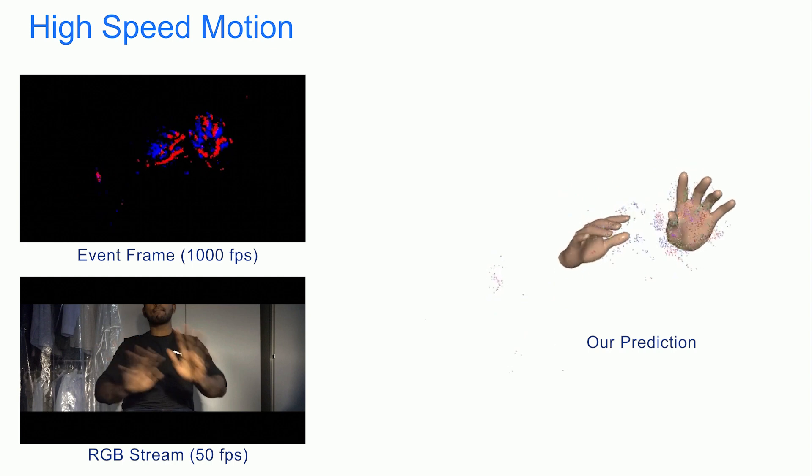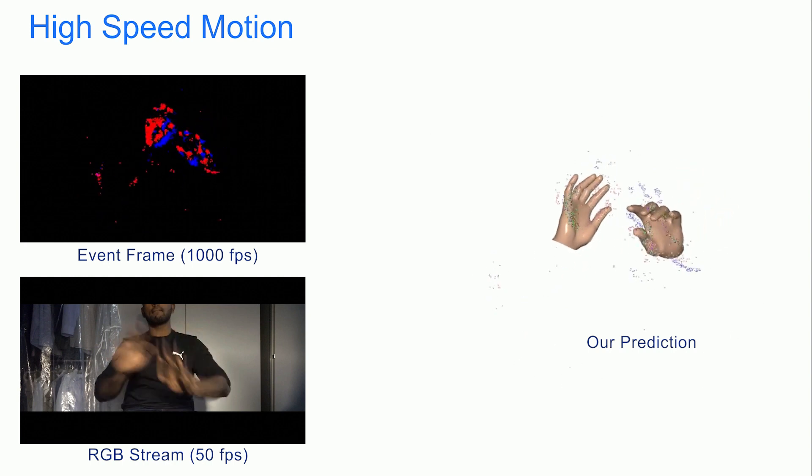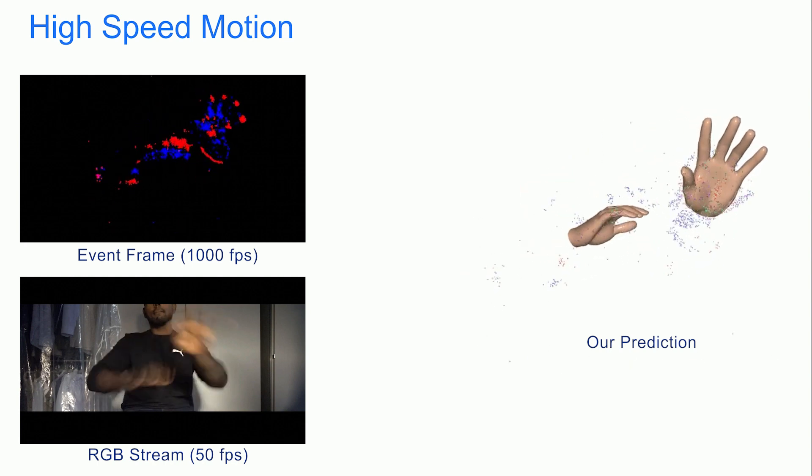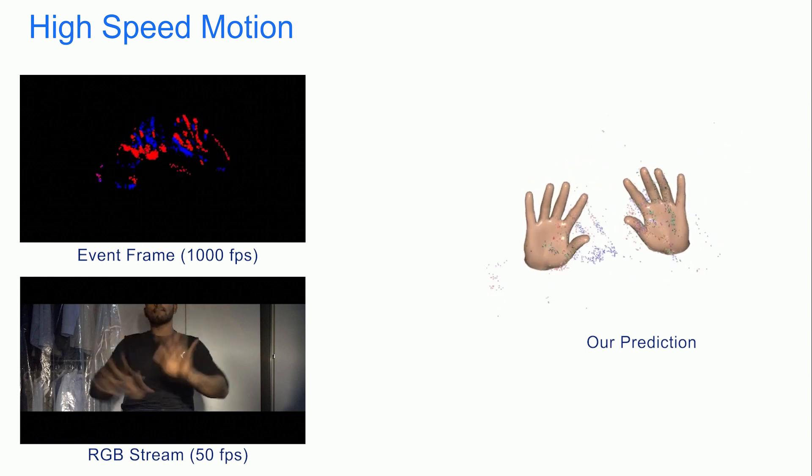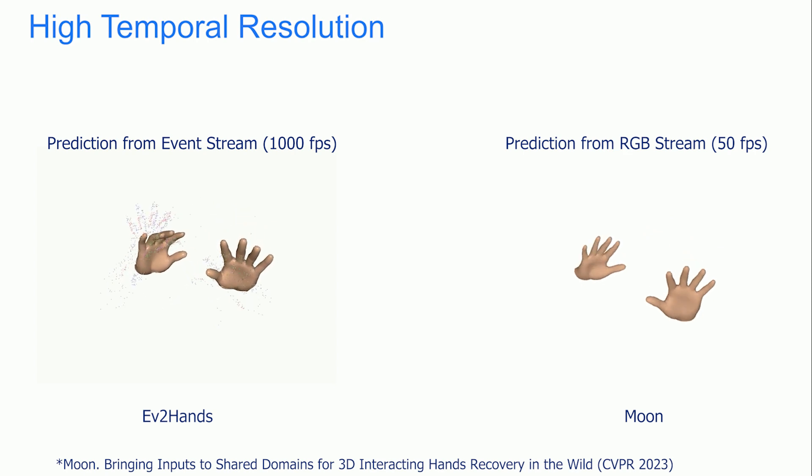Furthermore, the high temporal resolution of events allows us to capture very fast hand motions at 1000 estimates per second. This enables our method to provide smooth transitions between subsequent poses of the hands, with extreme temporal sensitivity compared to traditional RGB methods.